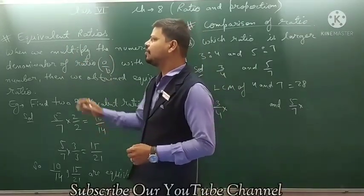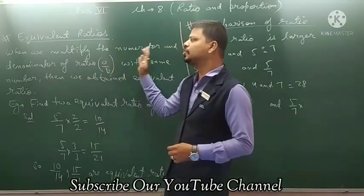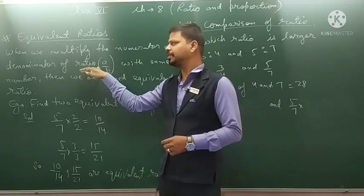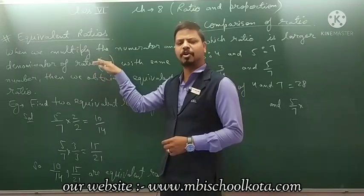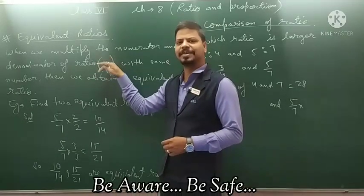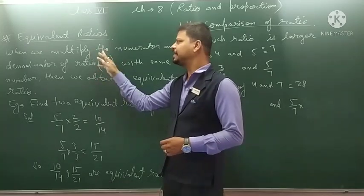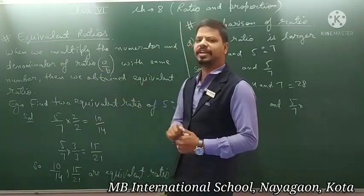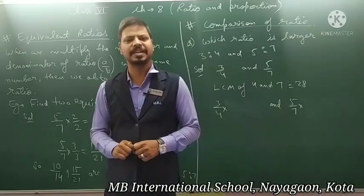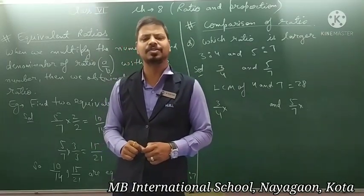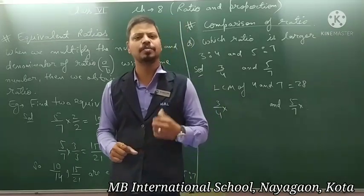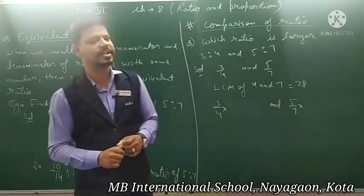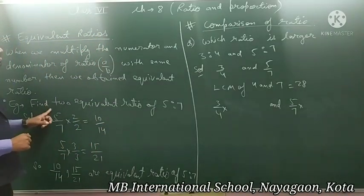So what is equivalent ratio? When we multiply the numerator and the denominator of a ratio — that is a upon b — with the same number, then we obtain an equivalent ratio. Means ratio ke numerator and denominator ko same number se multiply karo, so multiply karne ke baad jo answer obtained hota hai, woh equivalent ratio hota hai.